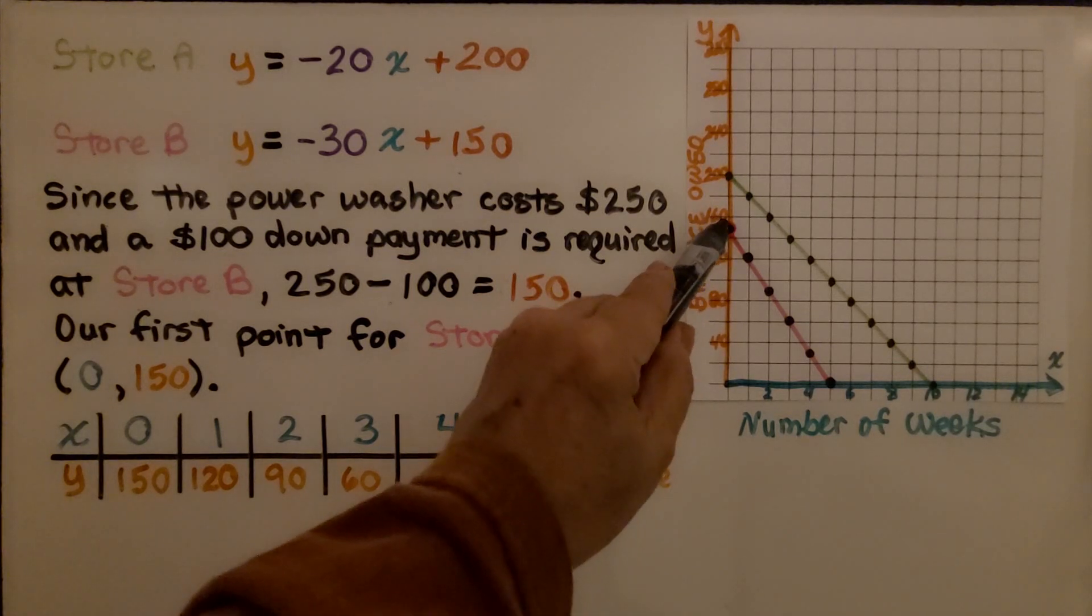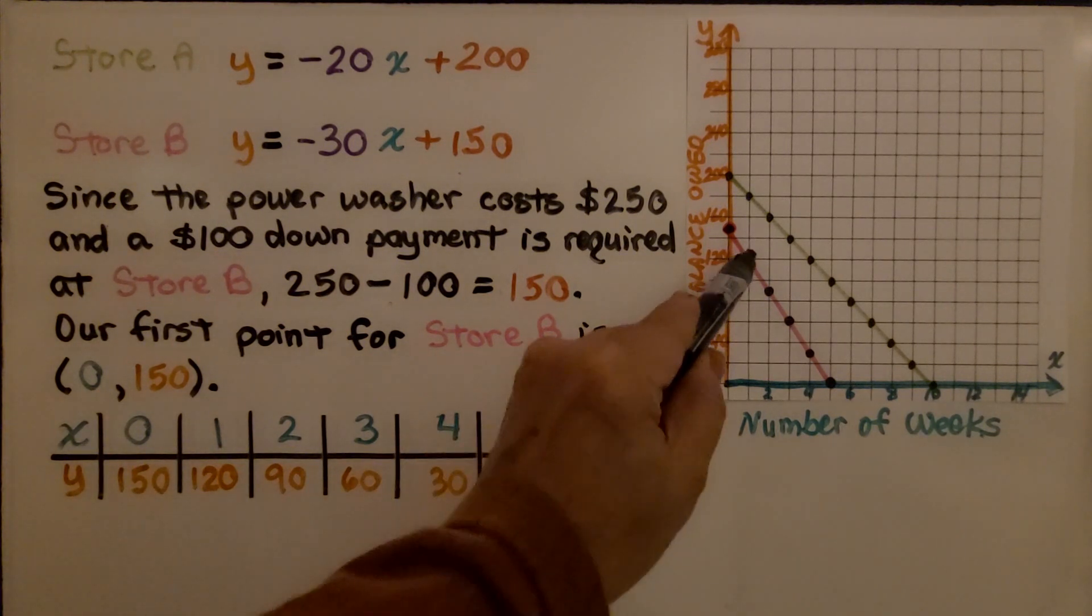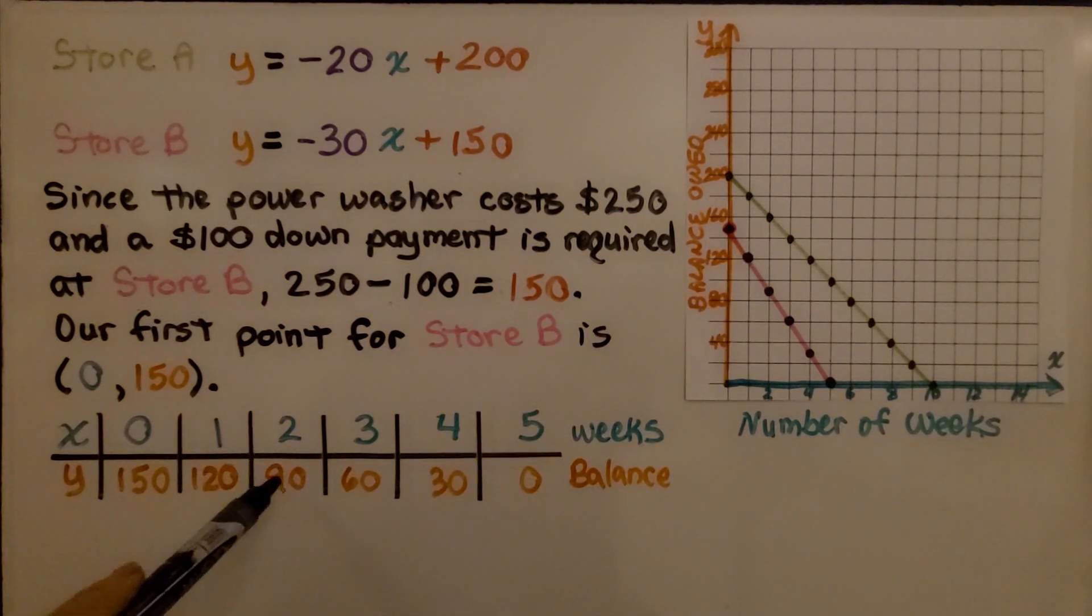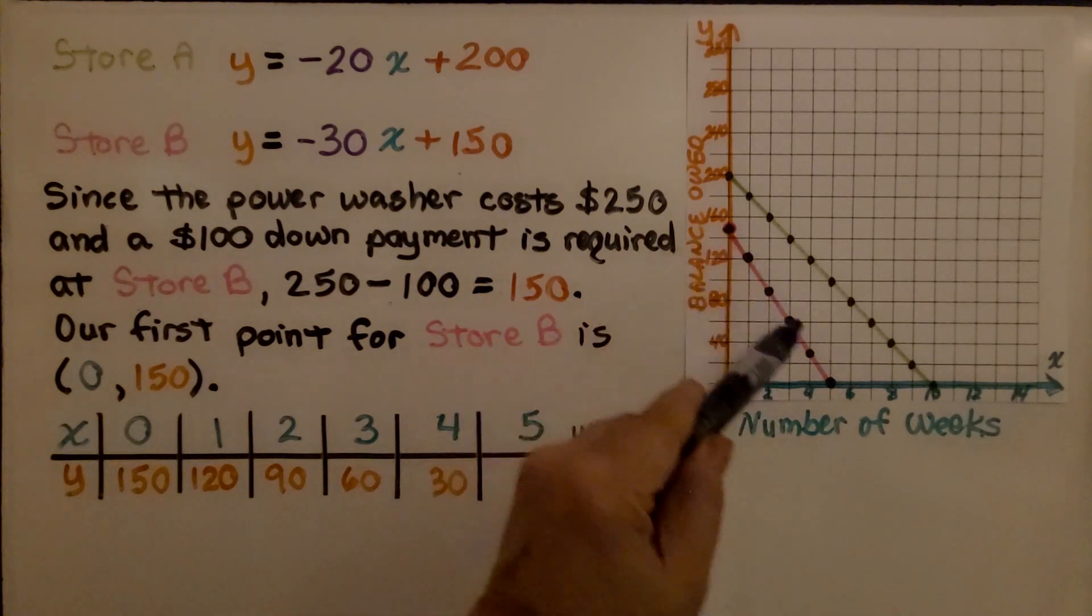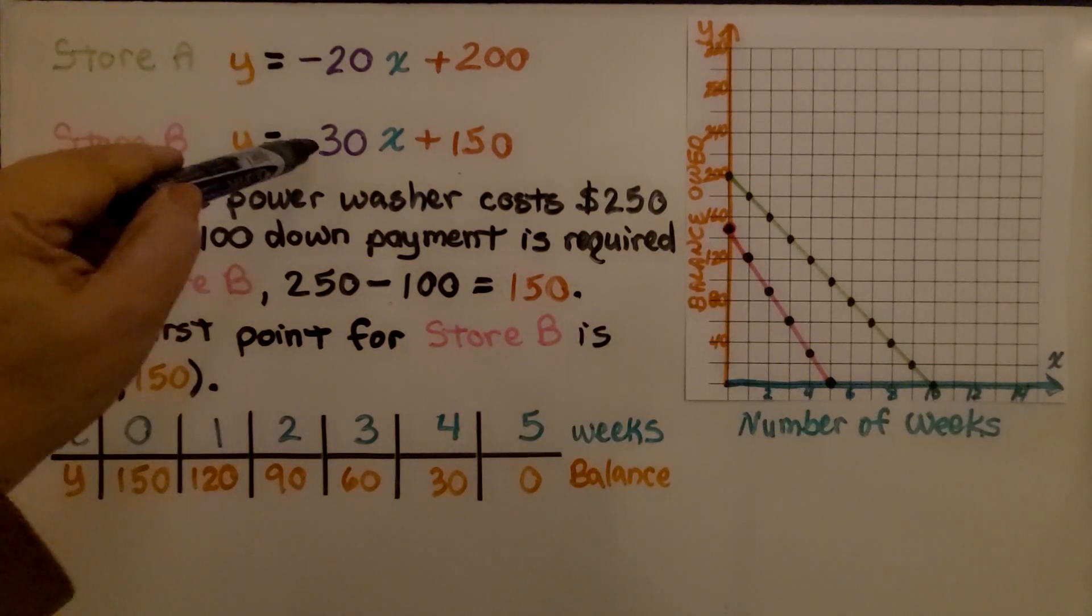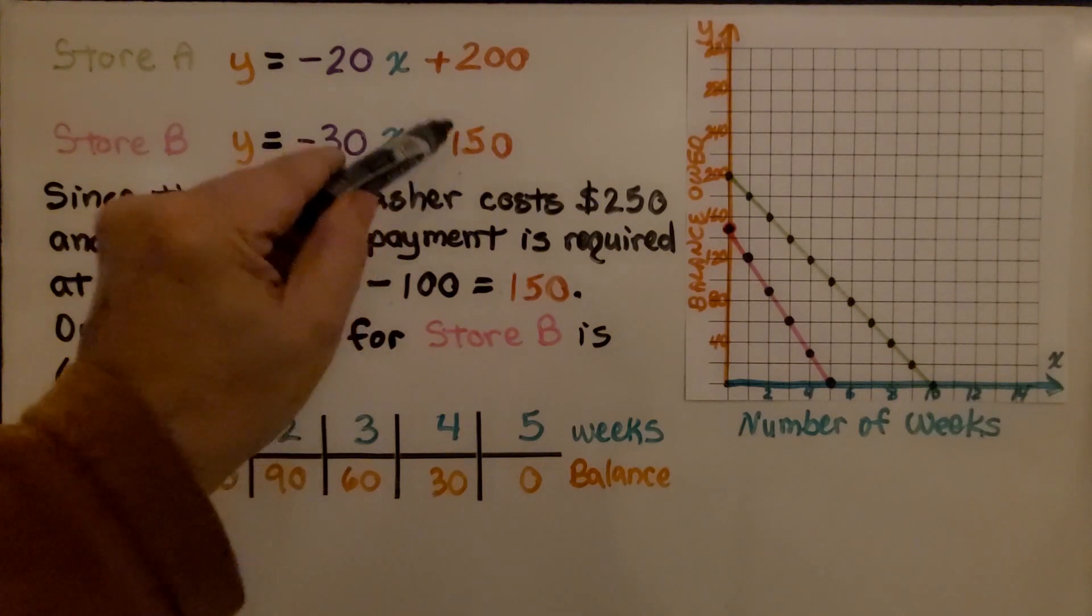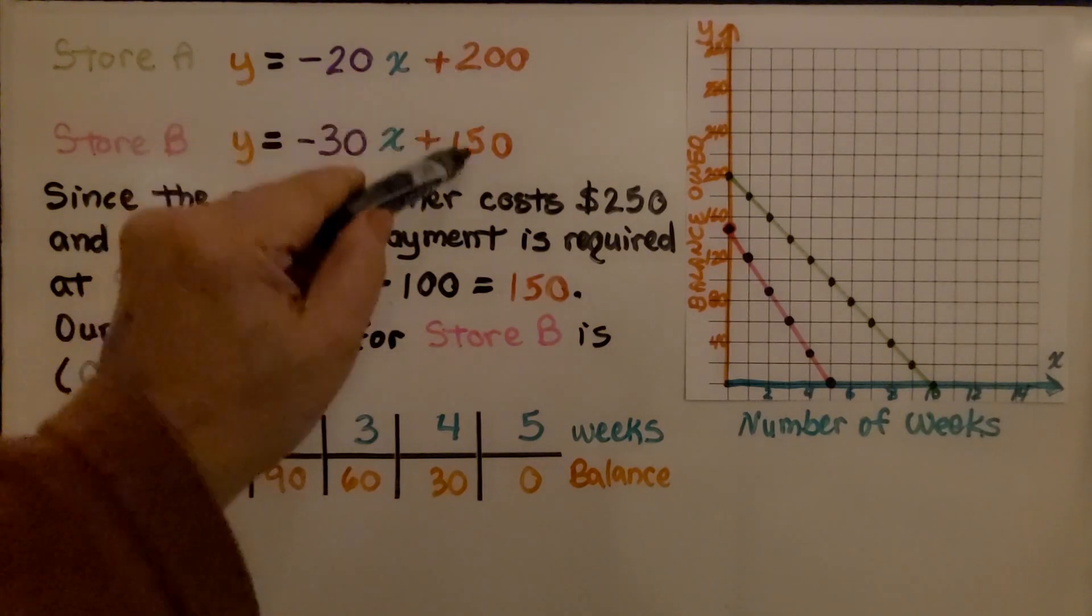It's going to be right here, right below the $160. Then we've got (1, 120) right here, (2, 90) here. We can see the number of weeks is fewer than store A. We're making greater payments, $30 instead of $20, and we had a greater down payment because the balance due is less.